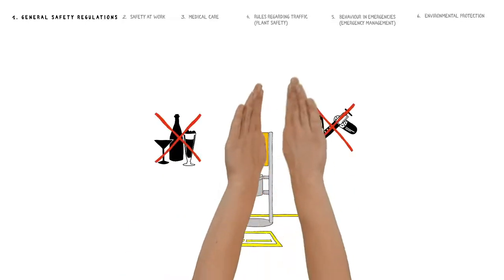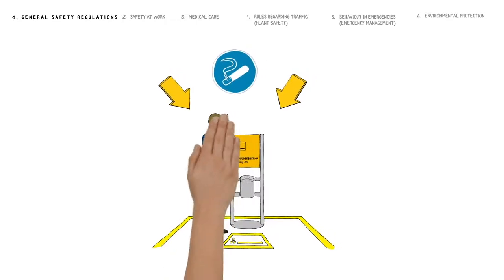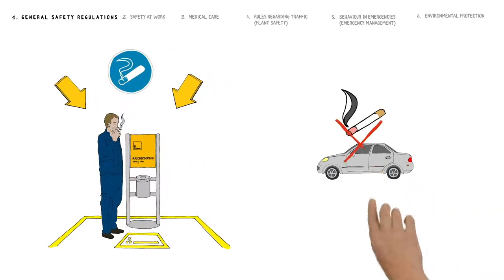It is forbidden to carry or consume alcohol or drugs anywhere on the chemical park site. Smoking is only permitted in the designated smoking areas. This blanket smoking ban also applies to all vehicles.